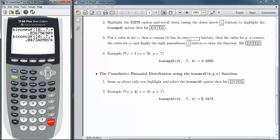And that gives us the probability of getting 4 or fewer successes. Rounded to 3 significant digits is 0.0473. So again, this is pretty easy stuff.